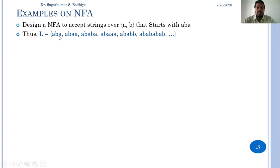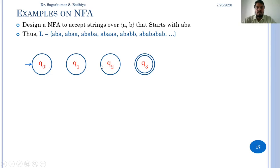Since the string length is 3, we make four states: q0, q1, q2, and q3. The first state q0 is the initial state and the last state q3 is the final state. We then add transitions on each input from one state to another so that after reading ABA we reach the final state.